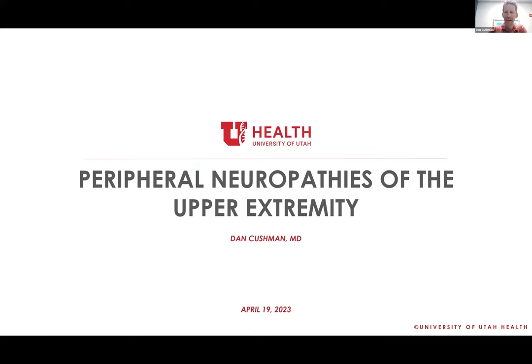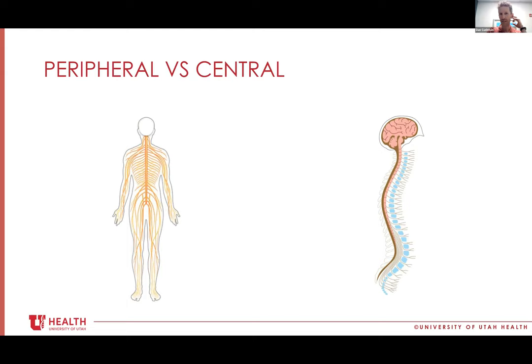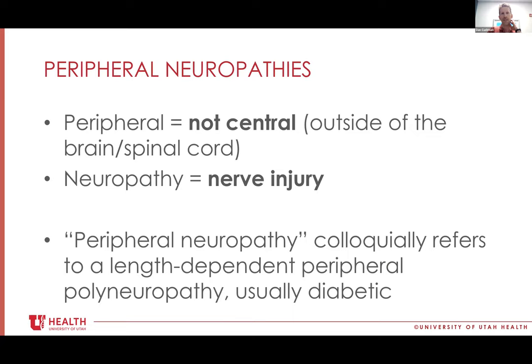I think we'll jump right in. I find that most people when they talk about nerves — especially within PM&R and in sports medicine in general — have this kind of inherent fear of them. Maybe we can talk about some of the basics first, then move on to some more specific findings. The main distinction to know is peripheral nerves versus central nerves. Peripheral neuropathies simply means it's not a central nerve — anything outside of the brain or spinal cord, from the anterior horn cell out for motor nerves and from the dorsal root ganglion out for sensory nerves. When we say peripheral neuropathy, most people think of diabetic peripheral neuropathy — that's a peripheral polyneuropathy. We're talking about any nerve injury of a peripheral nerve.